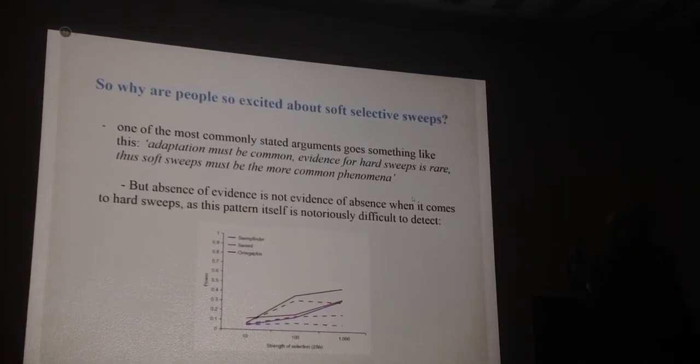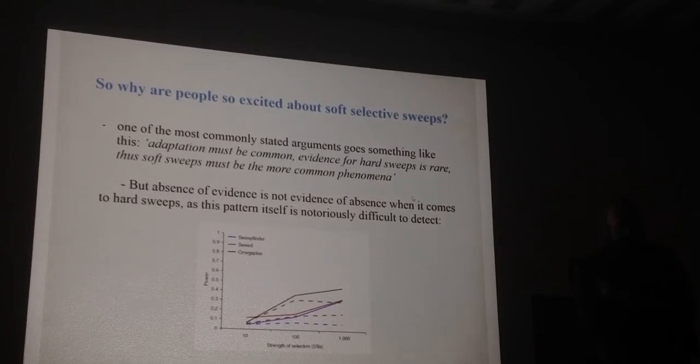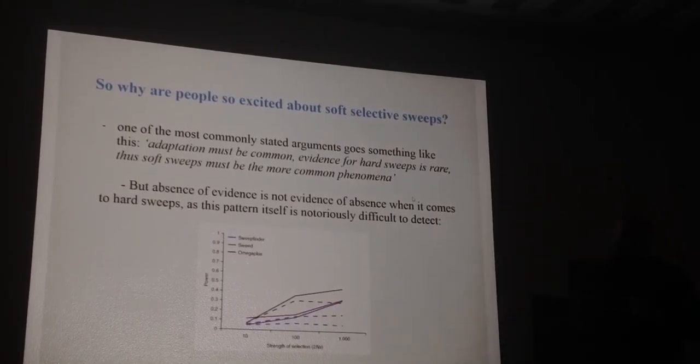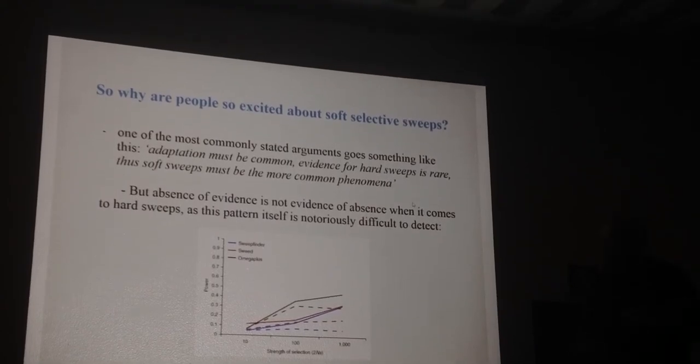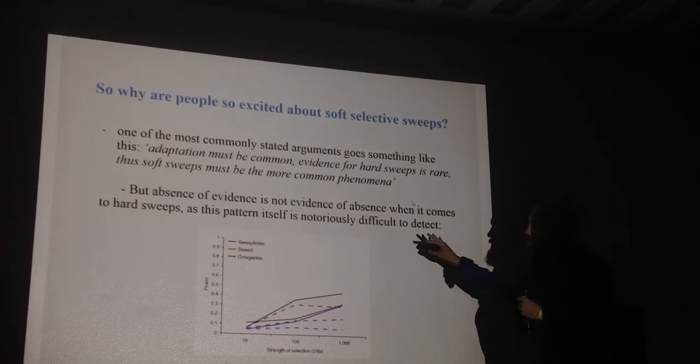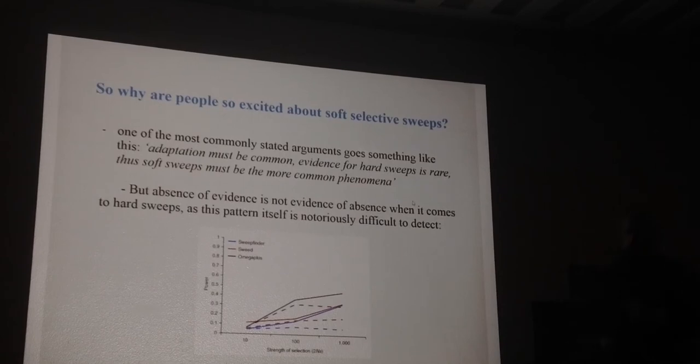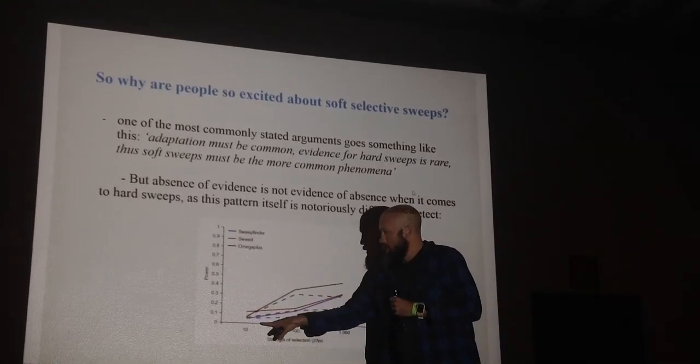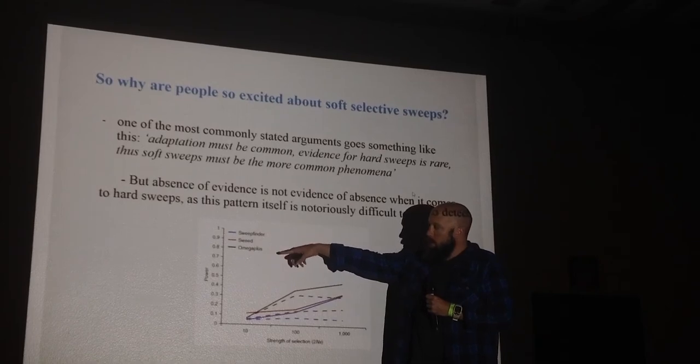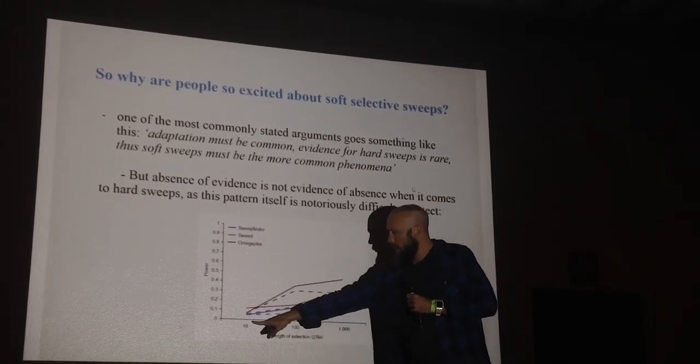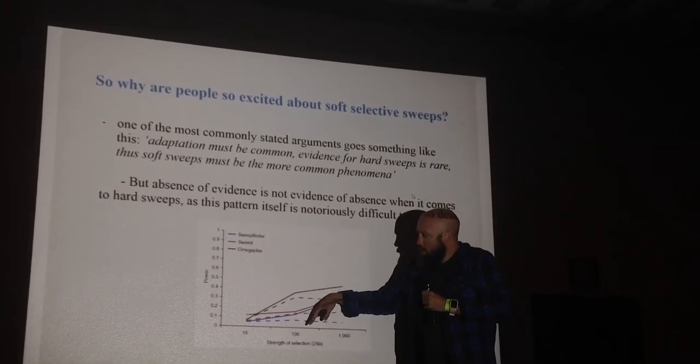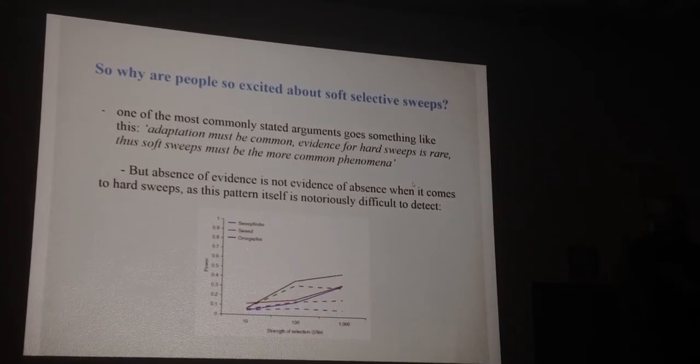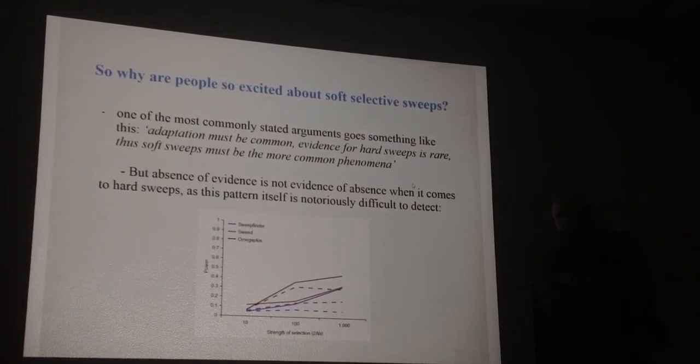Why are people excited about this? If I were to pessimistically summarize some of these papers, it might look something like this: adaptation is clearly common, evidence for hard sweeps is uncommon, and so soft sweeps must be very important. I'd just like to make the case that absence of evidence isn't evidence of absence when it comes to hard sweeps. We know a lot about finding these guys, and we know that it's tough, that's essentially what we know for sure. Here I'm just showing you performance for three of the most commonly used hard sweep statistics: SweepFinder, SweeD, and OmegaPlus. Across different selection intensities for a neutral model and a bottleneck model, you see that power rarely exceeds 40%. It's still pretty hard to find hard sweeps. So just because we don't see them all over the place doesn't mean they're not there.